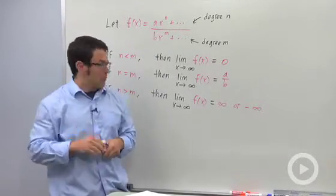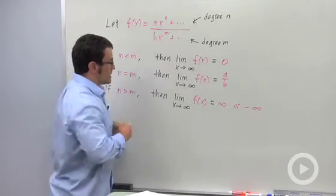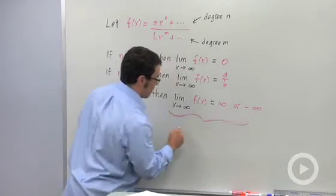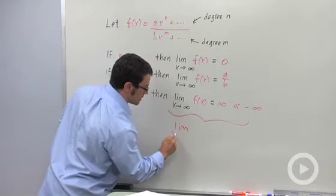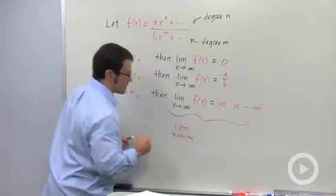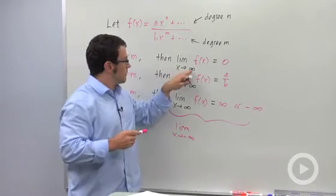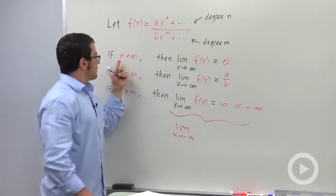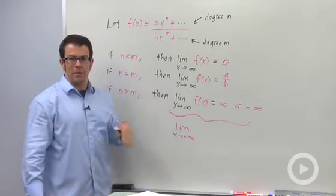And the other thing to remember is that these results are also identical for limit as x approaches negative infinity. So it's the same results. As x approaches negative infinity, f of x goes to 0 if the numerator has a degree less than the denominator, and so on.